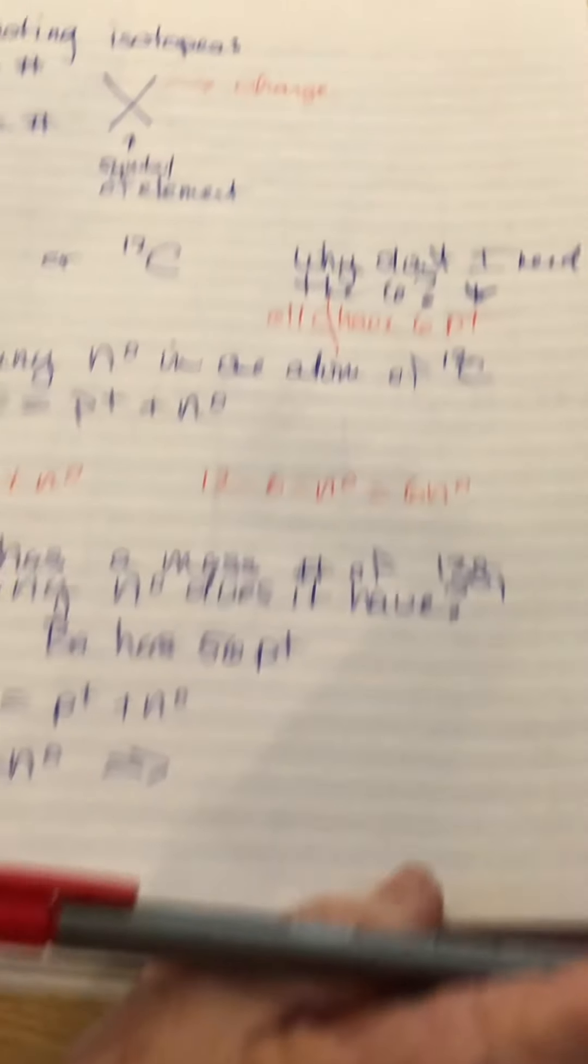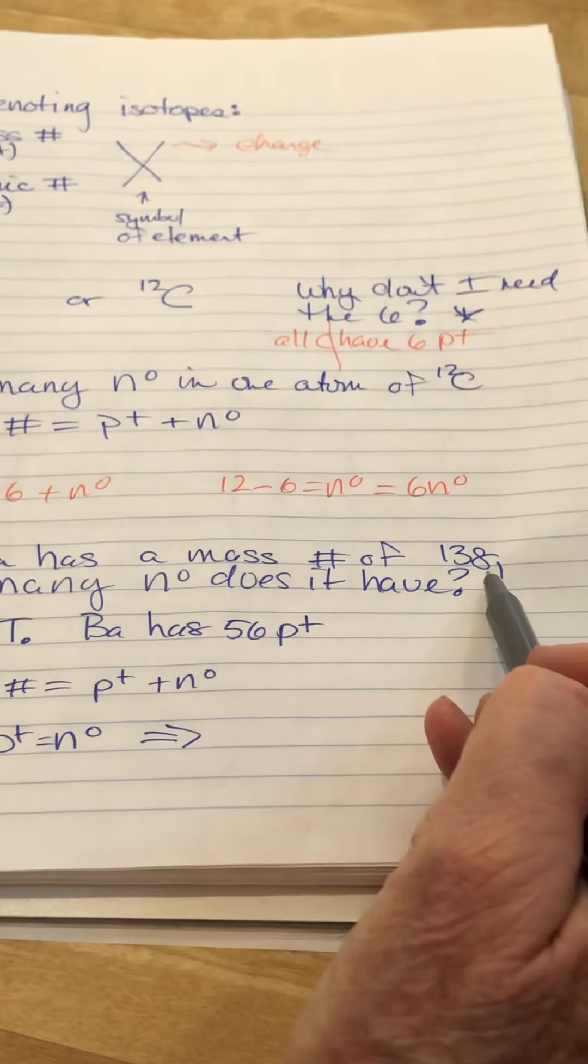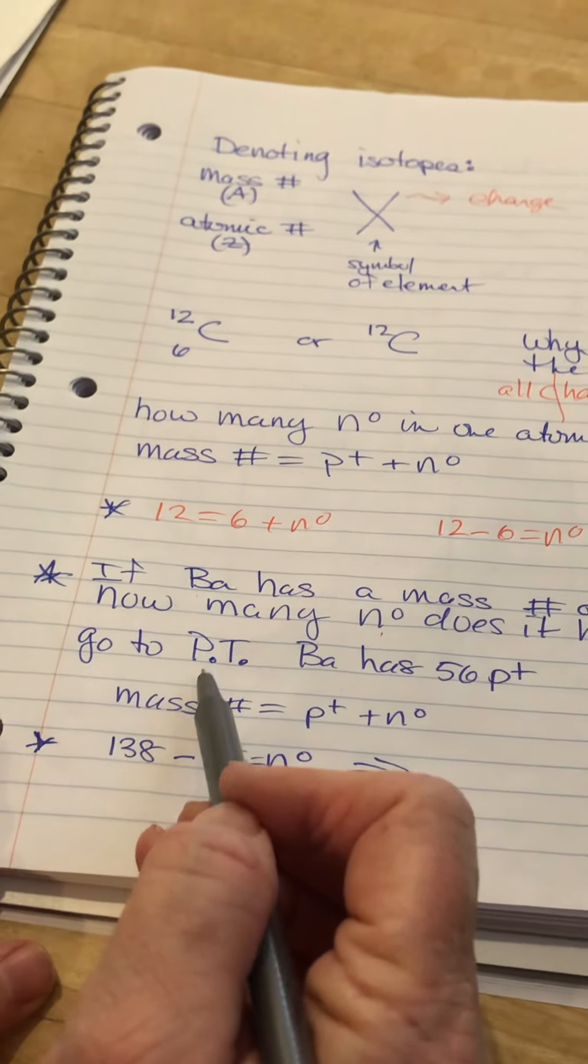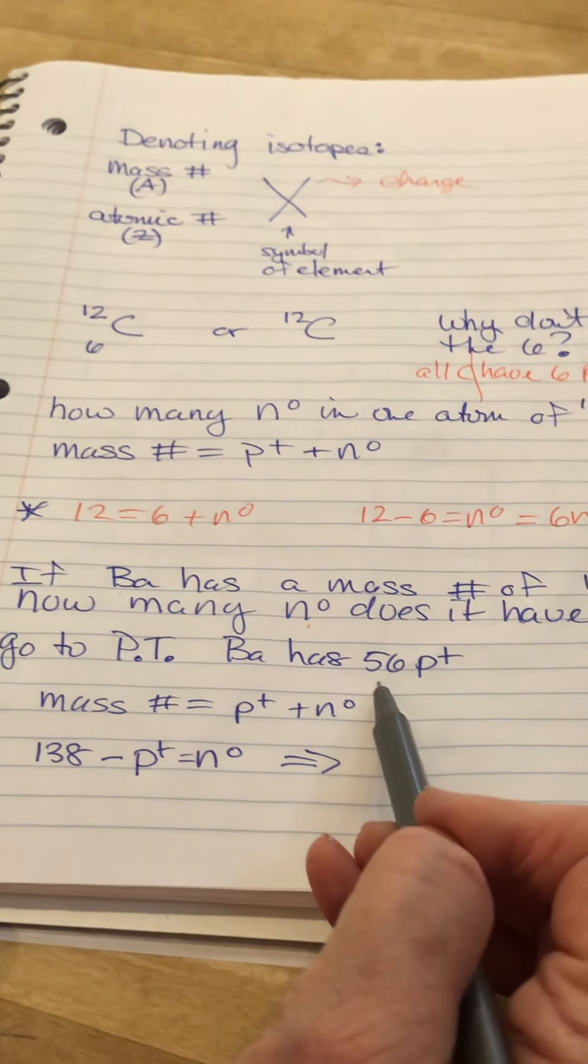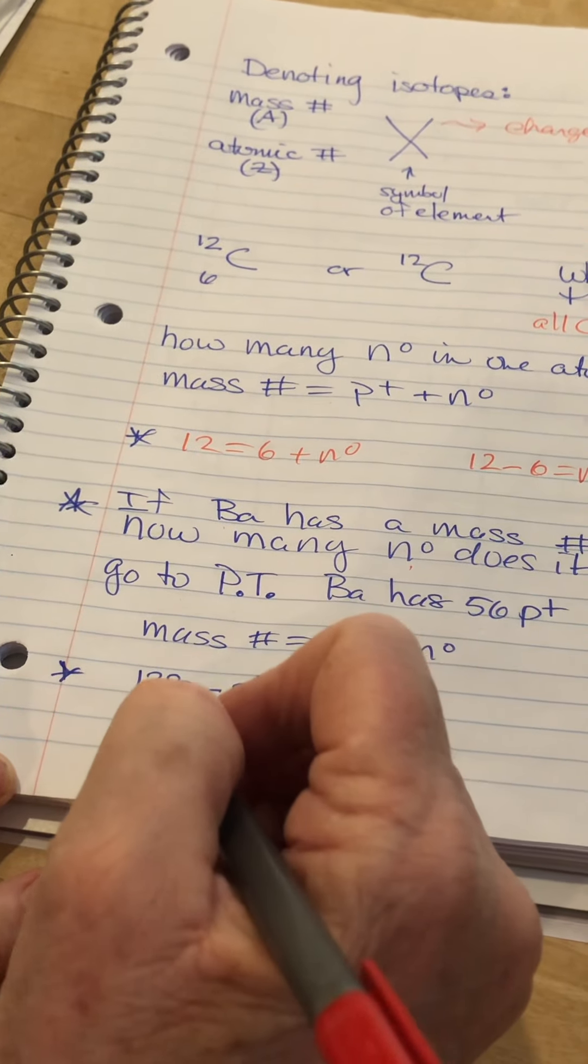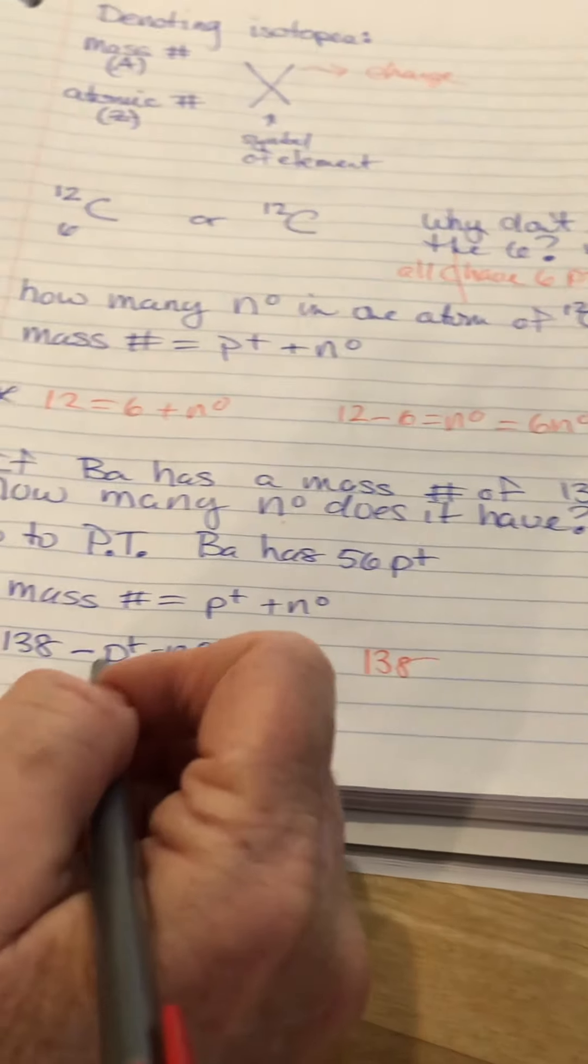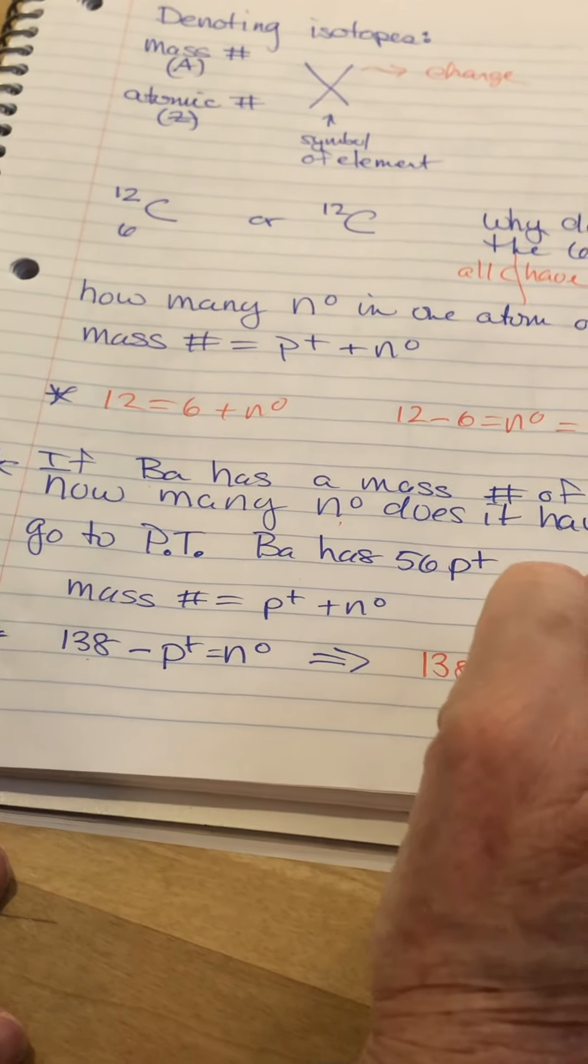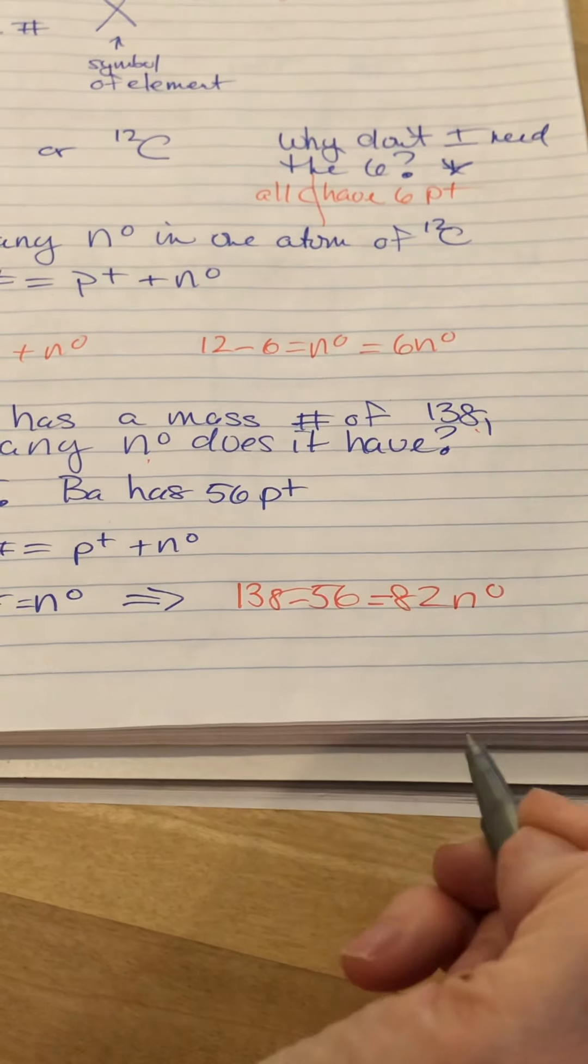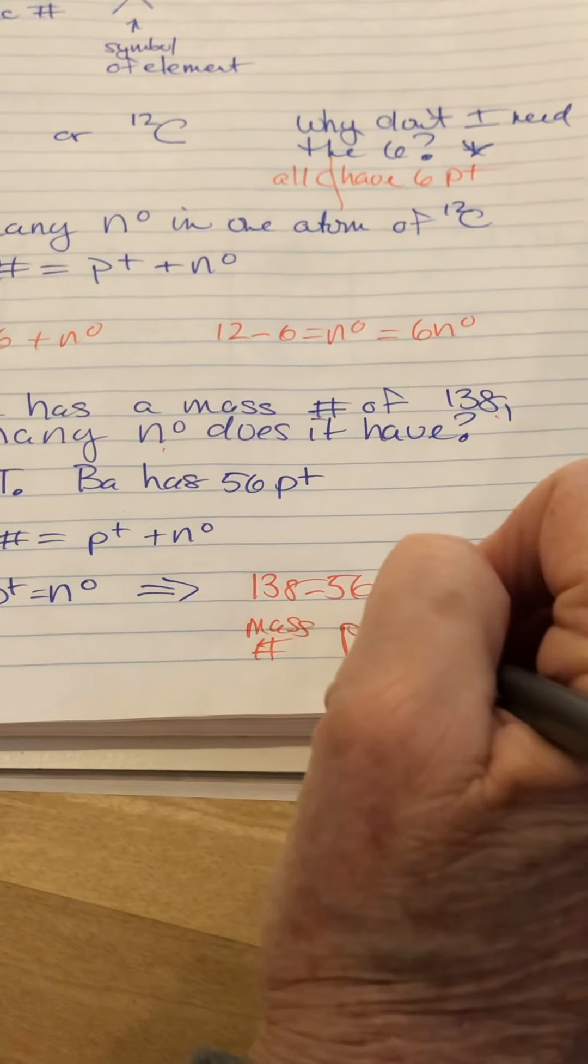Let's do one more problem, which isn't too terribly difficult. We've got barium, and I've just told you that barium has a mass number of 138, and I want to know how many neutrons it has. So, you're going to go to the periodic table, and you're going to find that barium has 56 protons. Again, mass number is protons plus neutrons. So, the mass number is 138. I've just looked up the protons, so I have 138. And I've rearranged the equation to solve for the neutrons. So, 138 minus 56, and if I do the subtraction, that gives me 82 neutrons. So we have mass number. This is protons, and that equals neutrons.